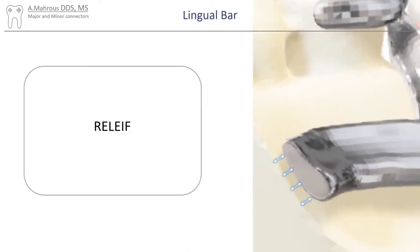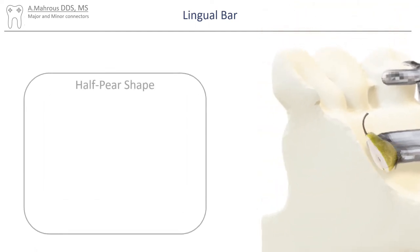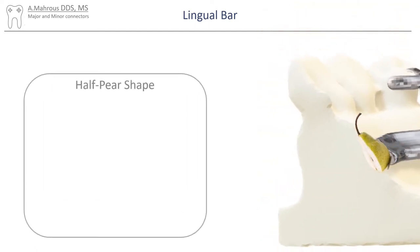You'll also notice that the lingual bar major connector does not actually touch the soft tissues — this is called relief. Relief is important in areas such as this because the floor of the mouth is non-keratinized and can be very easily traumatized if contact is sustained. You'll also notice that the lingual bar major connector has a cross-section of a half pear shape.